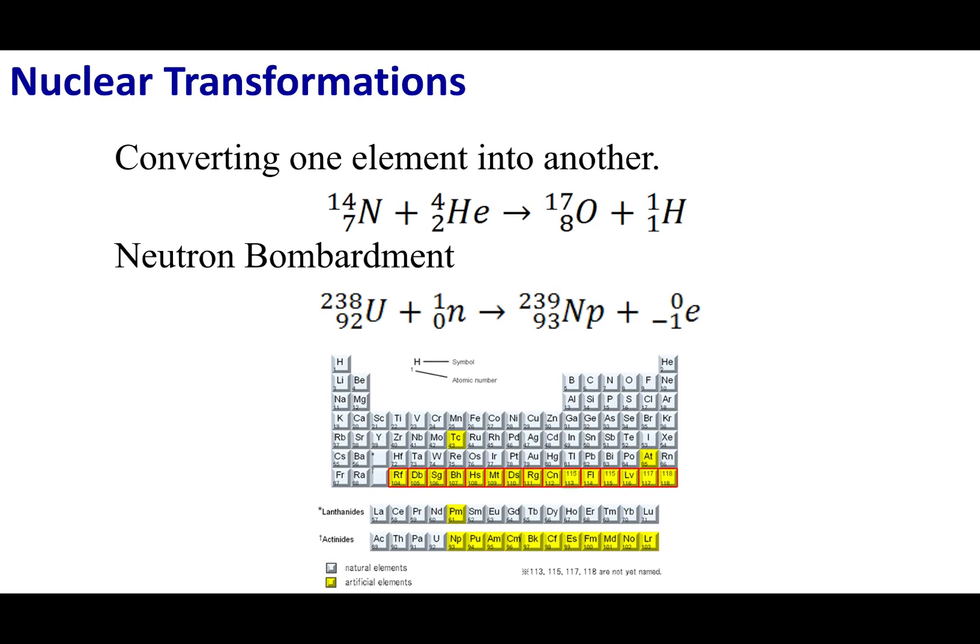Now, this kind of harps back all the way to ancient chemistry with alchemists. The idea with alchemists is they wanted to take lead into gold or change one element from one thing to another. Because of Dalton, this idea was kind of backshelled and people thought you couldn't change one element into another.